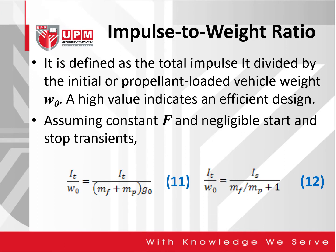Next is the impulse to weight ratio. It is defined as the total impulse I subscript T divided by the initial or propellant-loaded vehicle weight W0. A high value indicates an efficient design. Assuming constant thrust and negligible start and stop transients, expression equation 11 as well as equation 12 can be written. We have the elements of the total impulse, the weight of the vehicle, the final mass of the propellant, and the gravitational acceleration component. Equation 12 is where we have the elements of the specific impulse.